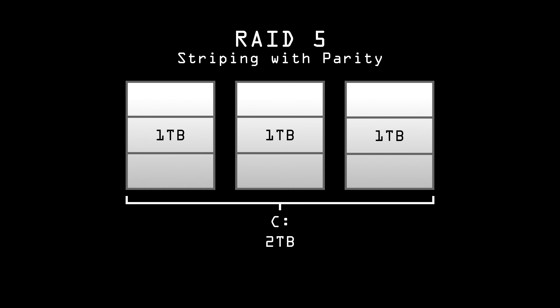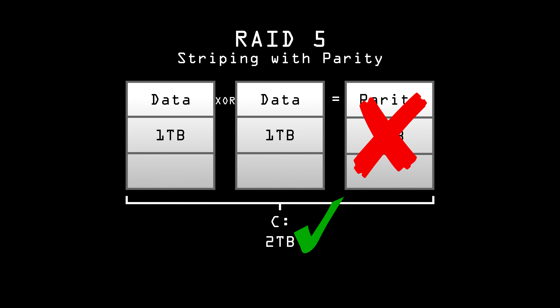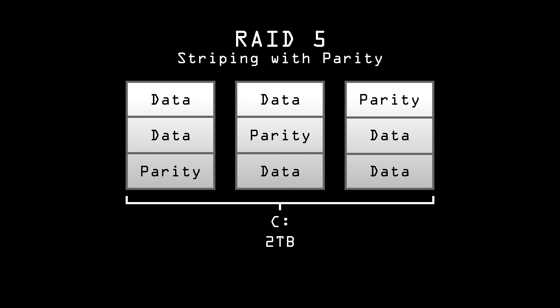RAID 5 is a very popular method where data is spread across more than two drives with a technique called striping. With three 1TB drives, each drive is divided into three sections, and each section combined with its corresponding section on the other two drives is a stripe. One section in each stripe is used for error correction known as parity. The two data sections are XORed together to make the parity section — if either data section is lost, it can be reconstructed from the parity bits and remaining data. RAID 5 uses distributed parity, meaning each stripe has its parity information on a separate physical drive to even out wear and tear, maximizing array life. With three 1TB drives, the logical volume will be 2TB, with the remaining terabyte going to parity data.